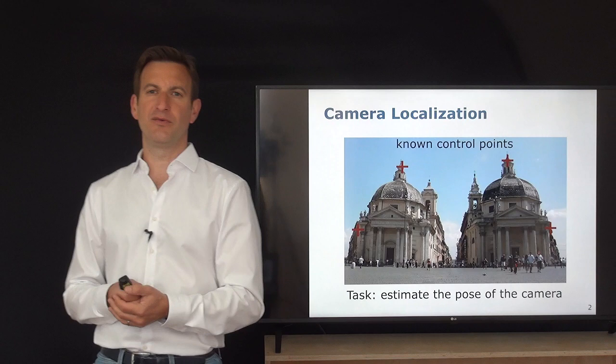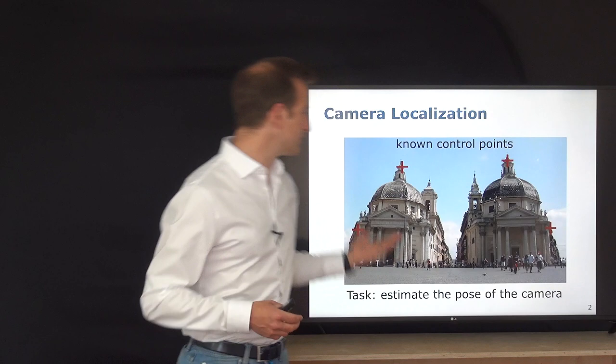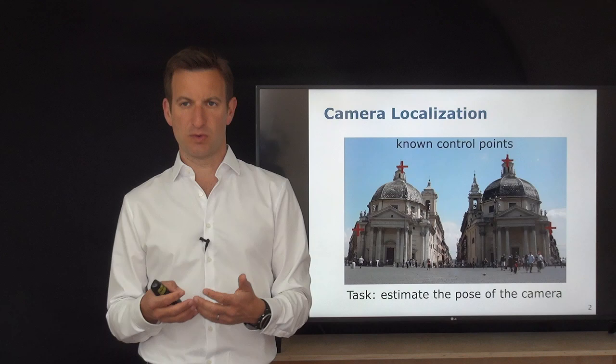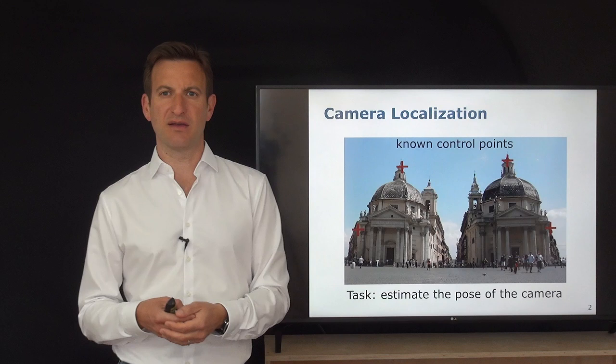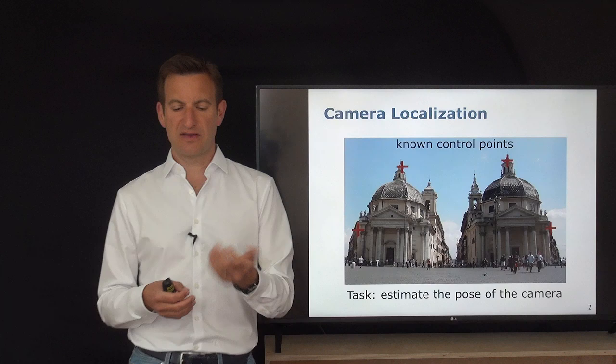A concrete example: consider a beautiful square in Rome where you know three or four locations marked with red crosses in the world — their 3D coordinates are known. You then want to estimate the position and orientation from which this image was taken, essentially localizing the photographer or the camera. That is what this algorithm is about.